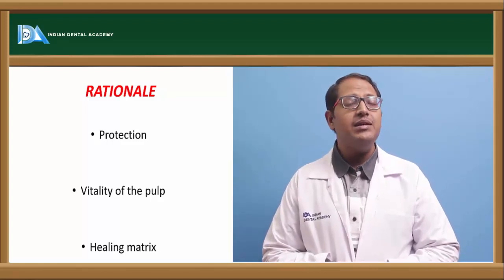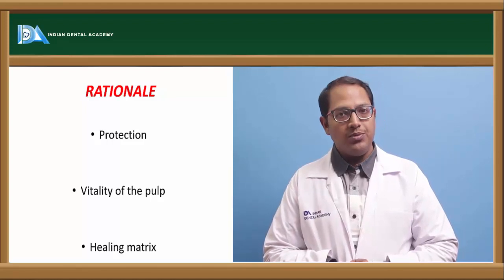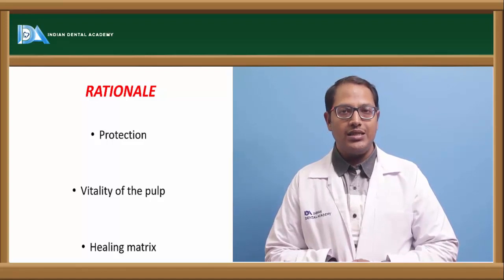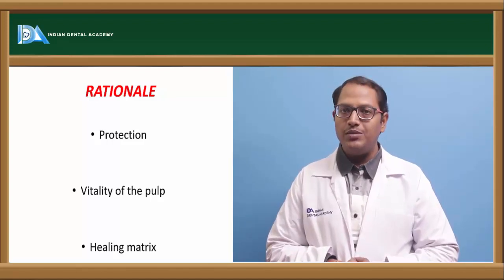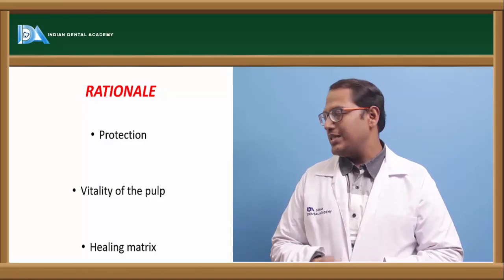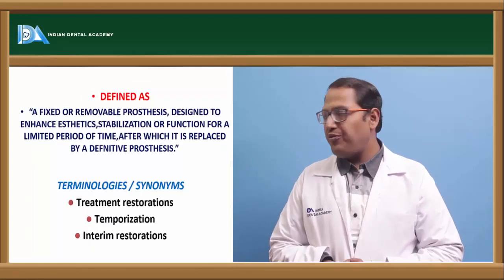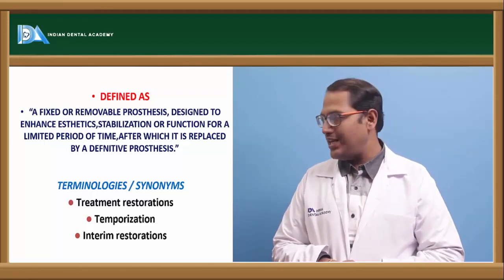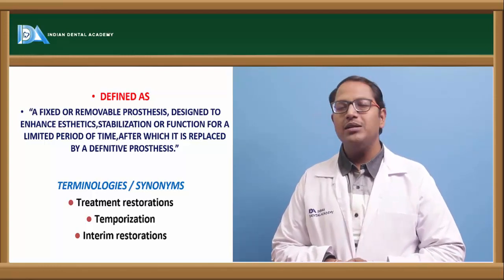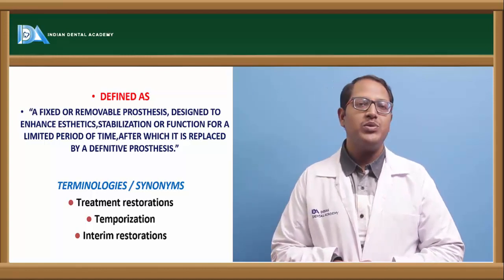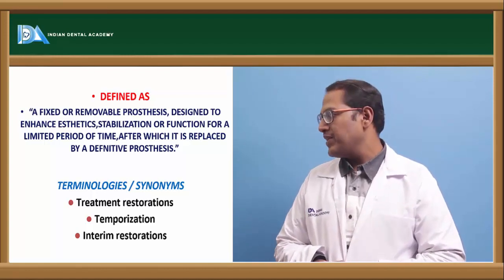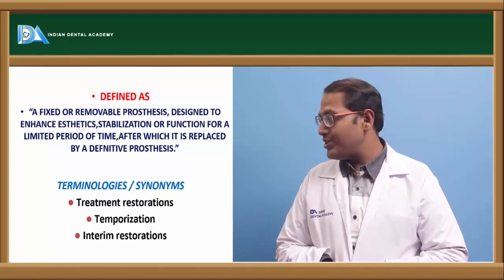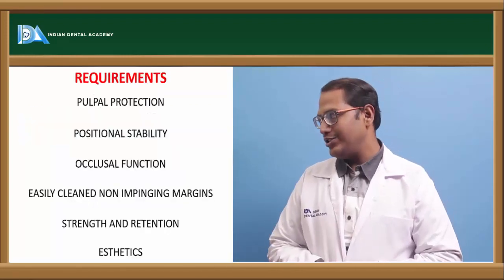It also acts as a healing matrix. Once you are preparing the tooth, the gingiva can also get hurt. Having something over it will protect it from further damage due to other oral liquids. Formally, it is defined as a fixed or removable prosthesis designed to enhance aesthetics, stabilization, or function for a limited period of time, after which it is replaced with the definitive prosthesis. Terminologies: it can also be called treatment restoration, temporization, or interim restoration of fixed partial dentures.